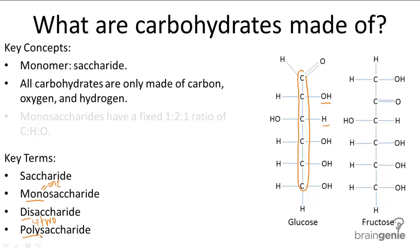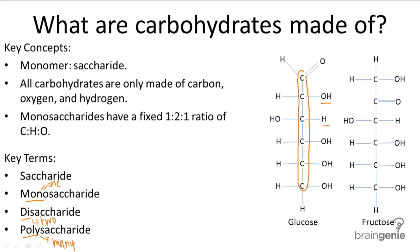We've talked about some of these prefixes before, and it's really important to remember them because they appear a lot in bio. A monosaccharide is really easy to recognize in written form if you remember that they always have a 1 to 2 to 1 ratio between carbon, hydrogen, and oxygen. For example, glucose is C6H12O6 — 6 to 12 to 6, or 1 to 2 to 1.